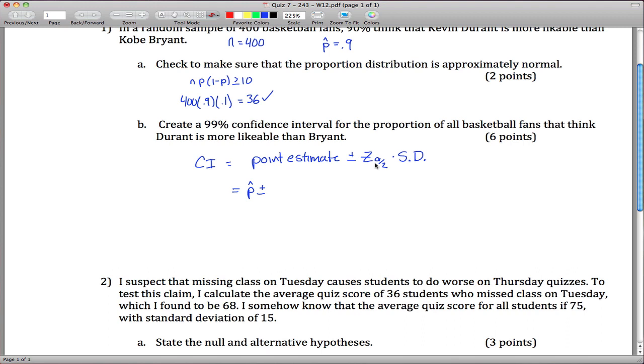It's z not t here because we're only estimating one parameter, p from p-hat, and because we want to be 99% confident, our critical value is 2.576.